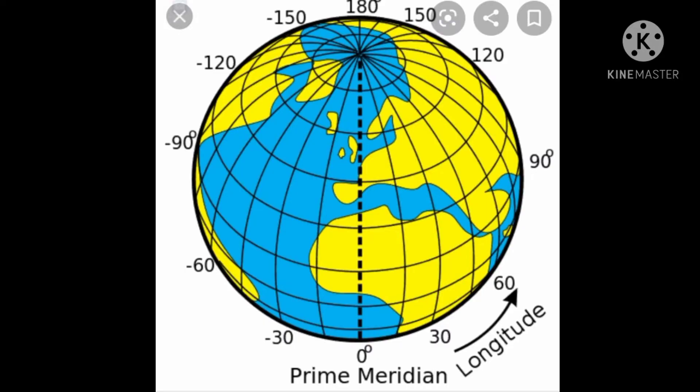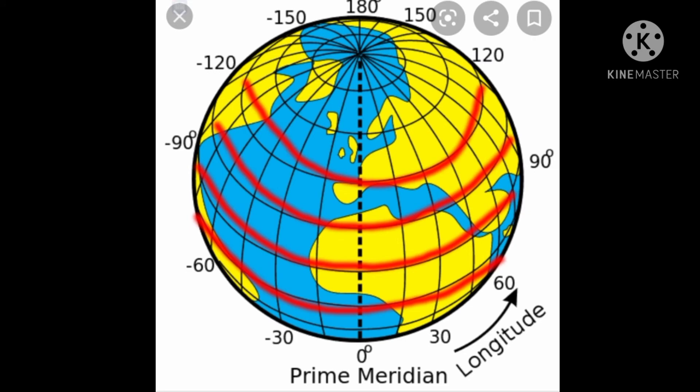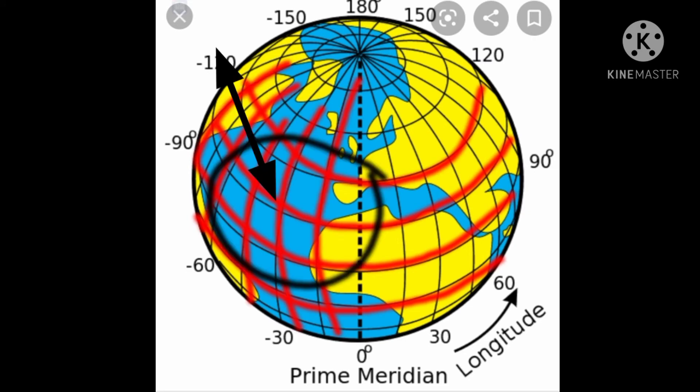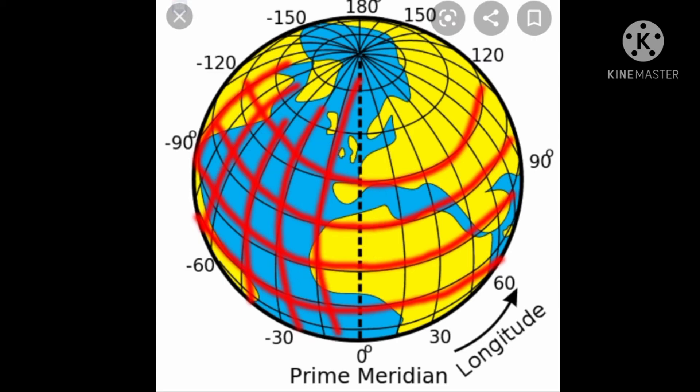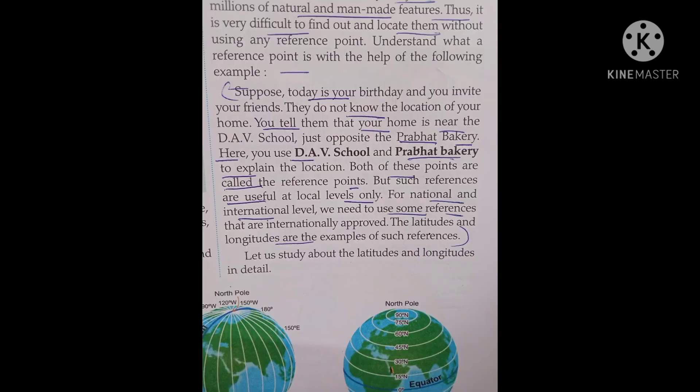What is a grid? The latitudes and the longitudes intersect each other — that means they cross each other — on the globe and form a grid system. Using this grid system, we can locate any place on the globe.